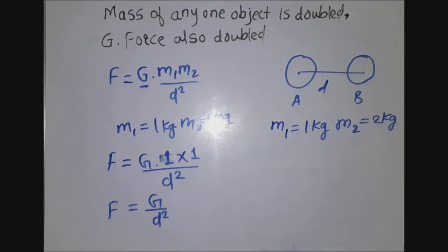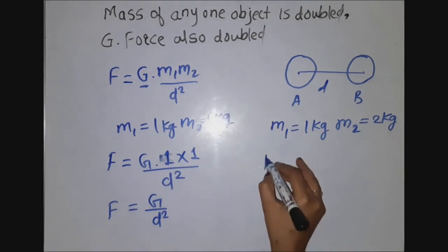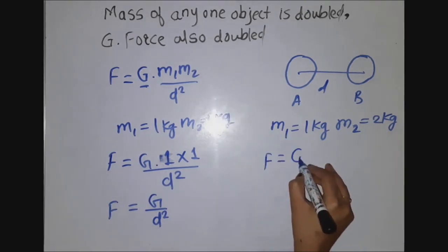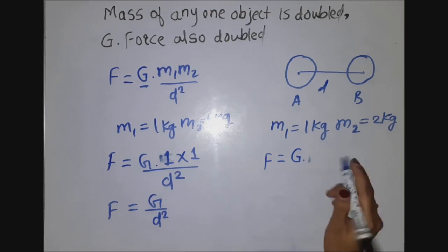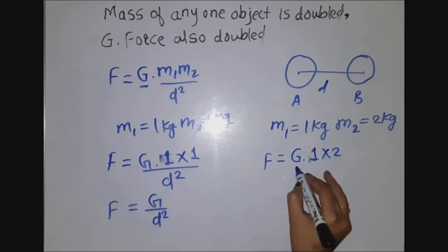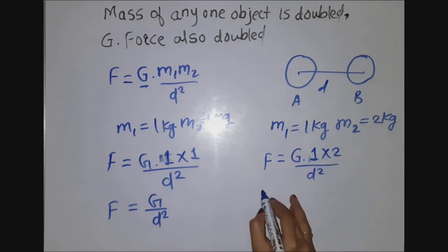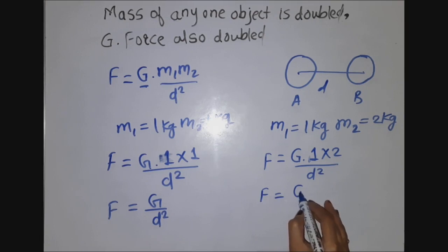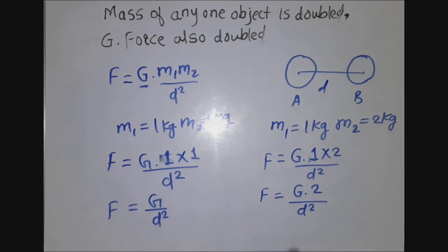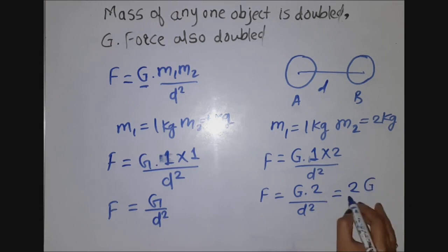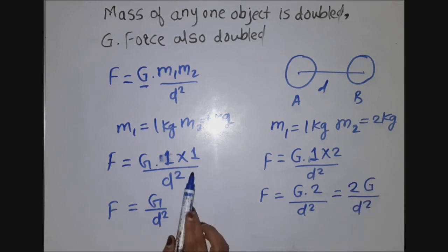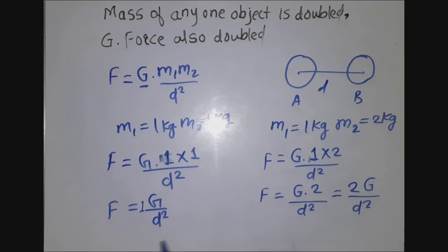So 1 into 2 means 2. The universal gravitational constant remains as it is. The equation becomes 2G divided by D squared. When mass was 1 kg, force was G over D squared. When mass was doubled to 2 kg, force becomes 2G over D squared — so the force is doubled. This confirms that if the mass of one object doubles, the gravitational force also doubles.